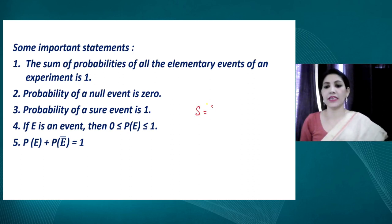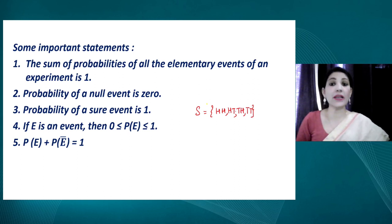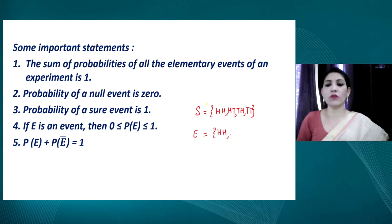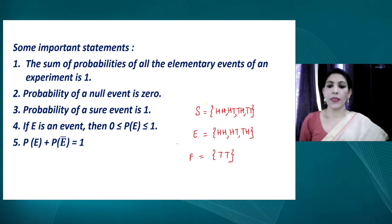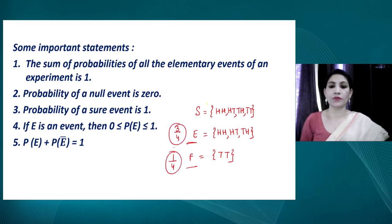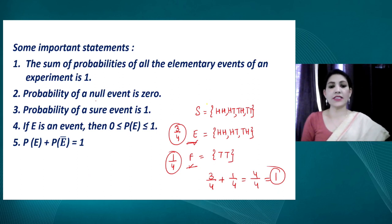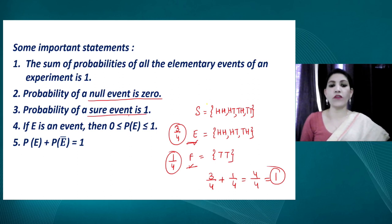An important statement: the sum of probabilities of all elementary events always equals 1. For example, if E is the event of getting at least one head when tossing two coins, and F is the event of getting both tails, then probability of E is 3/4 and probability of F is 1/4, and their sum is 1. Also, the probability of a null event is 0 and the probability of a sure event is 1.